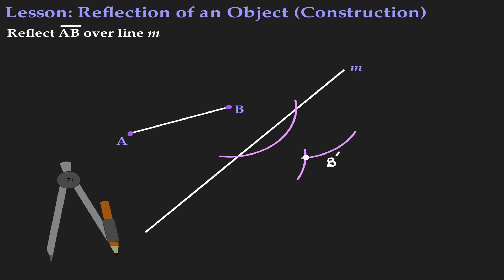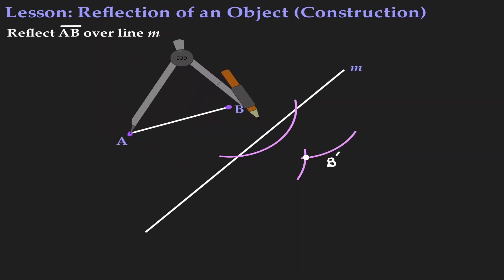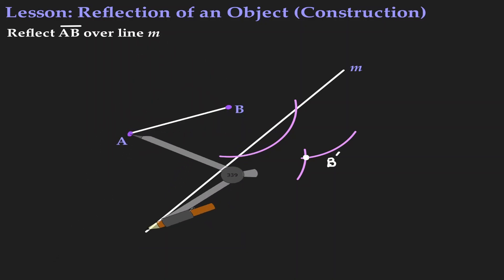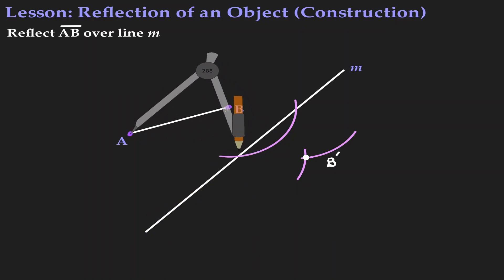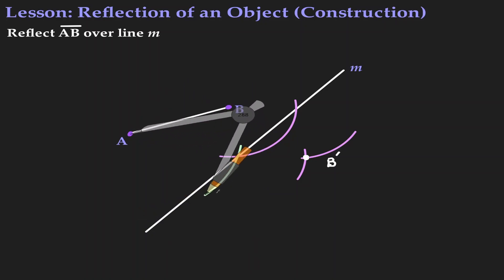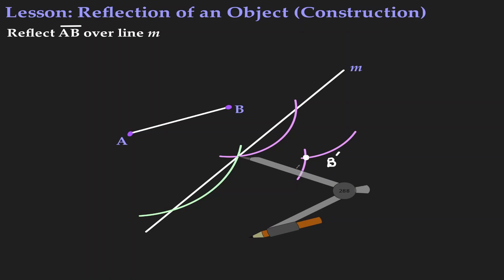Now let's repeat the process, but for point A. Let's move the metal leg to point A and open our compass so that it intersects the line segment at two different locations. Without changing the length of the compass, let me move my metal leg to the first intersection and create a mark on the inside.